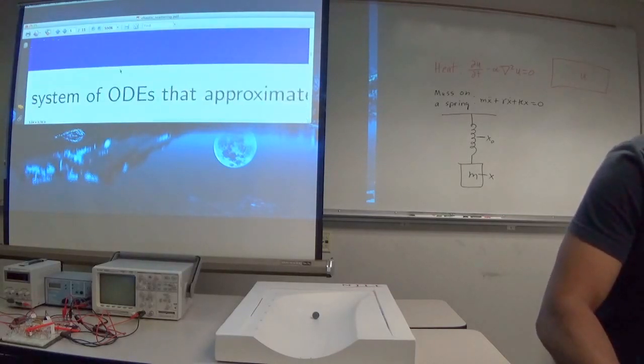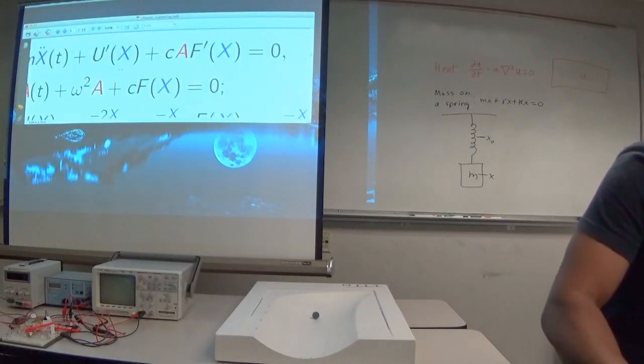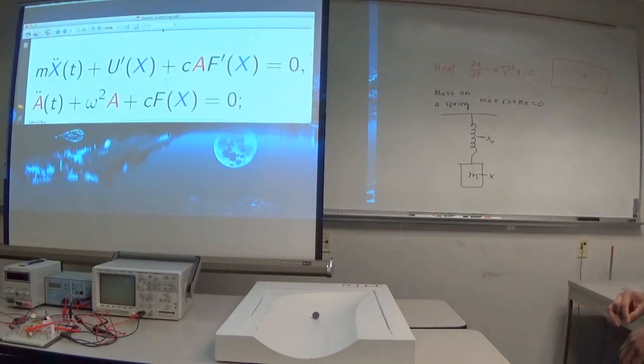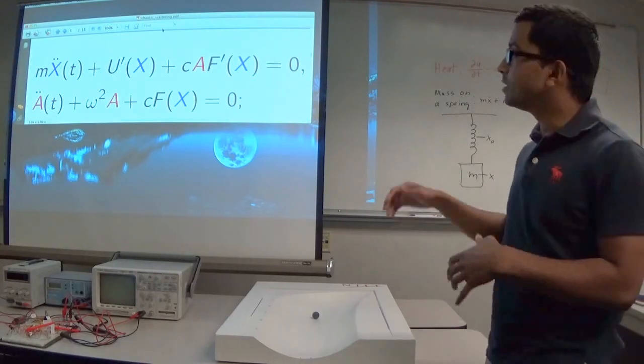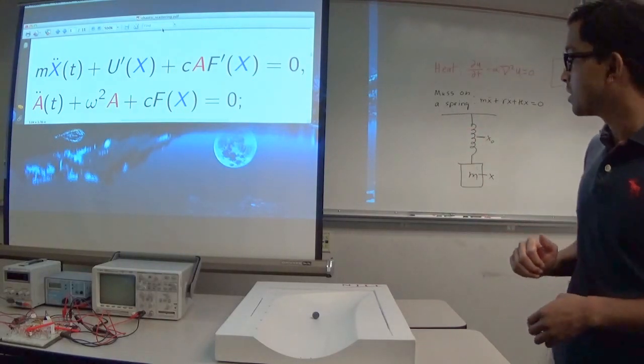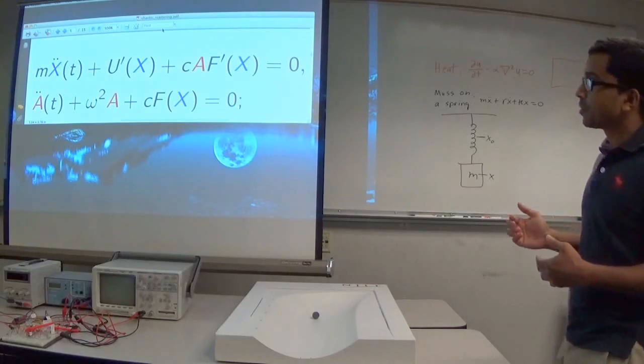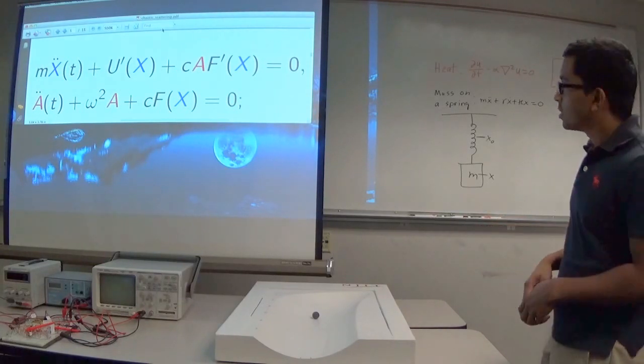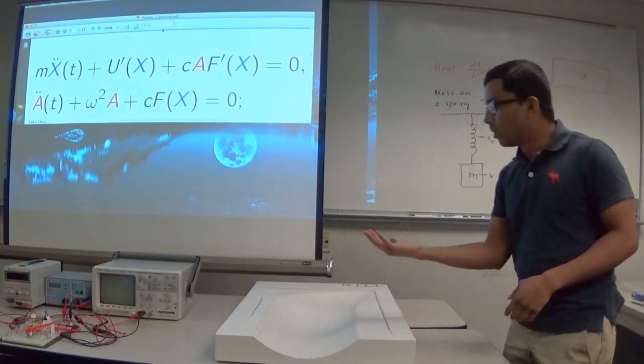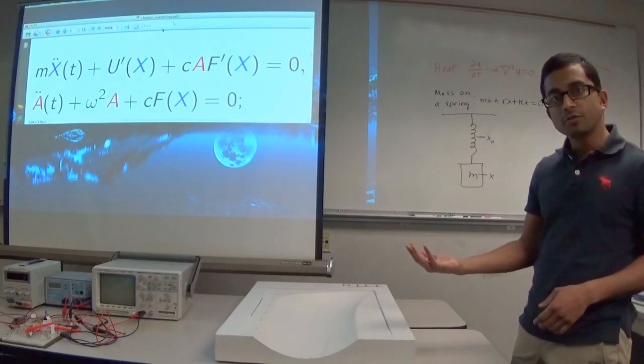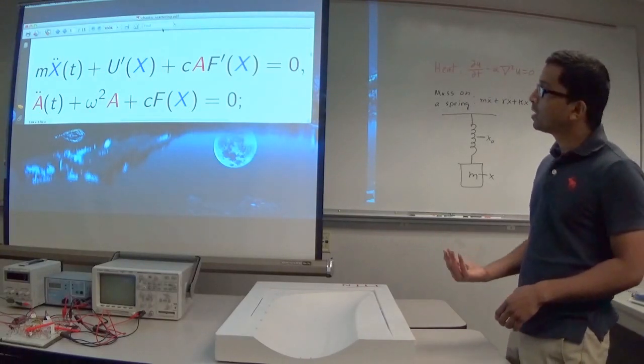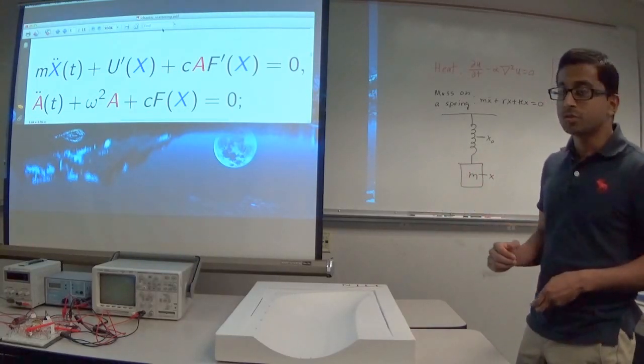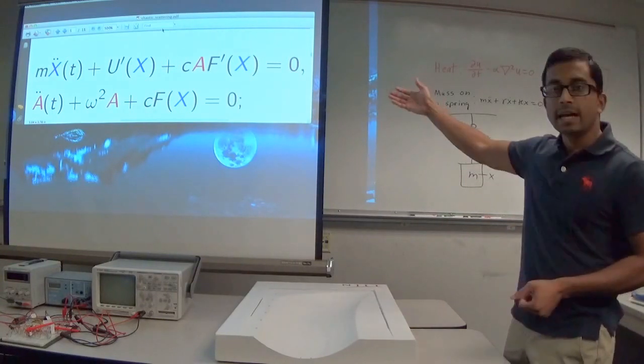However, we can reduce this to a system of ordinary differential equations. So this is also very complex, but the nice thing about this is that it's two second order ordinary differential equations. And second order ordinary differential equations are used to model motion. So we can think of a ball rolling on a surface. That would give us two second order ordinary differential equations.